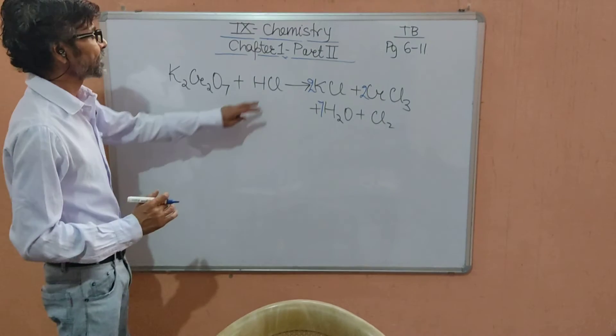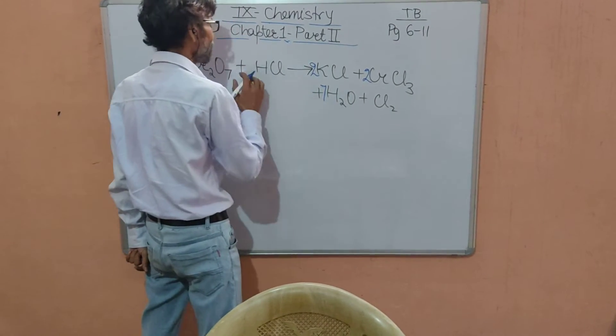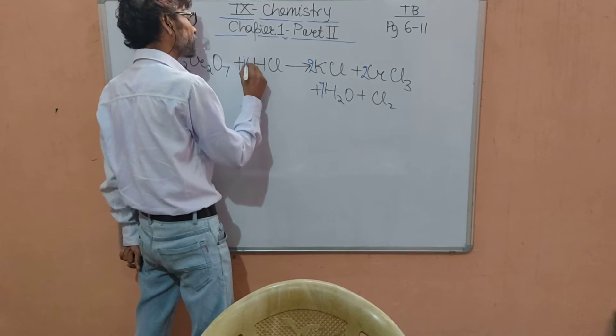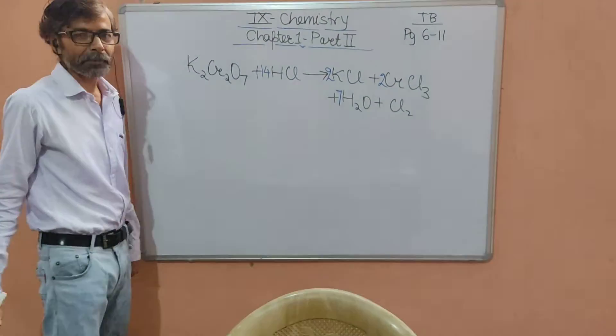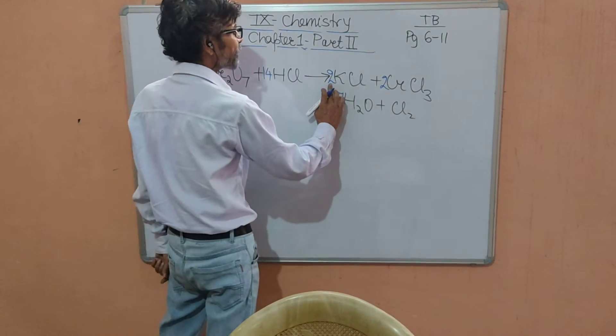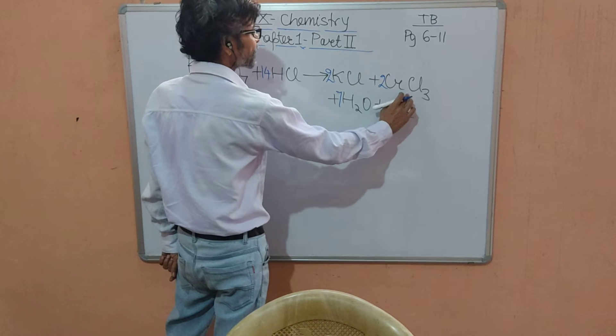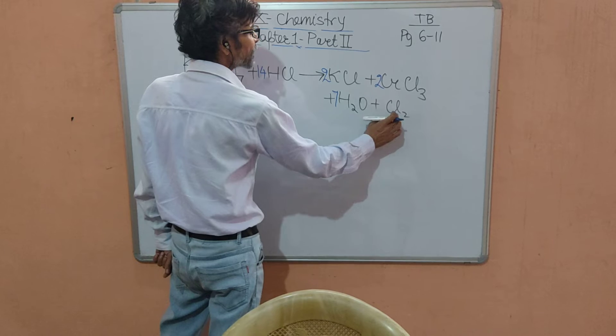Then comes the hydrogen. Here hydrogen is one but now here hydrogen has become 14, so if we multiply we get 14 hydrogen. Now till hydrogen we have balanced, only chlorine is left. We count 14 chlorine here. Here available two plus six, eight chlorine are here. If we get six more to make this, we multiply this by three and we get the chlorine also balanced.